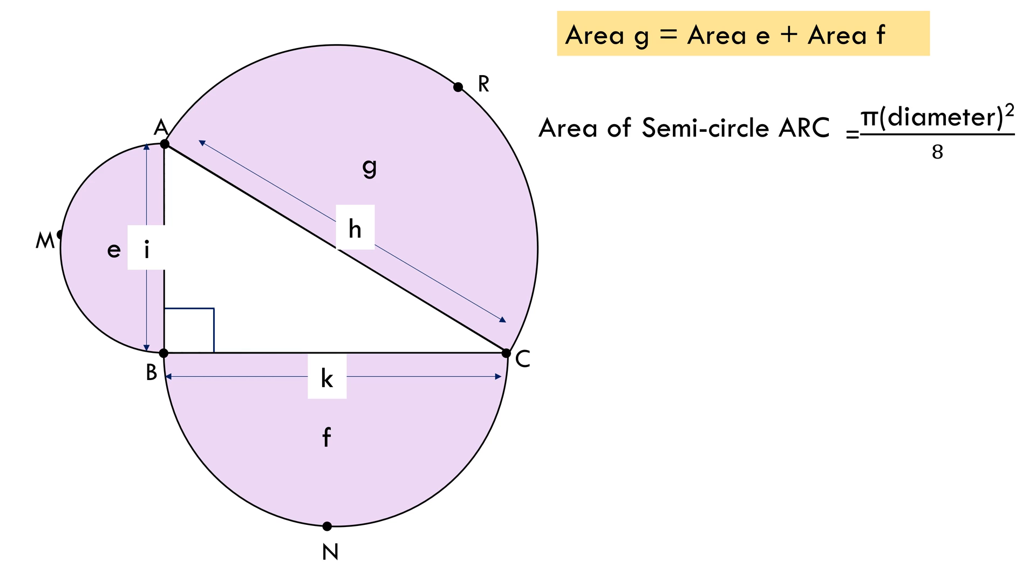Here diameter equals H, therefore area equals πH²/8. Using Pythagoras theorem in this triangle, we get H² equals I² plus K². Let's replace H² with I² plus K².